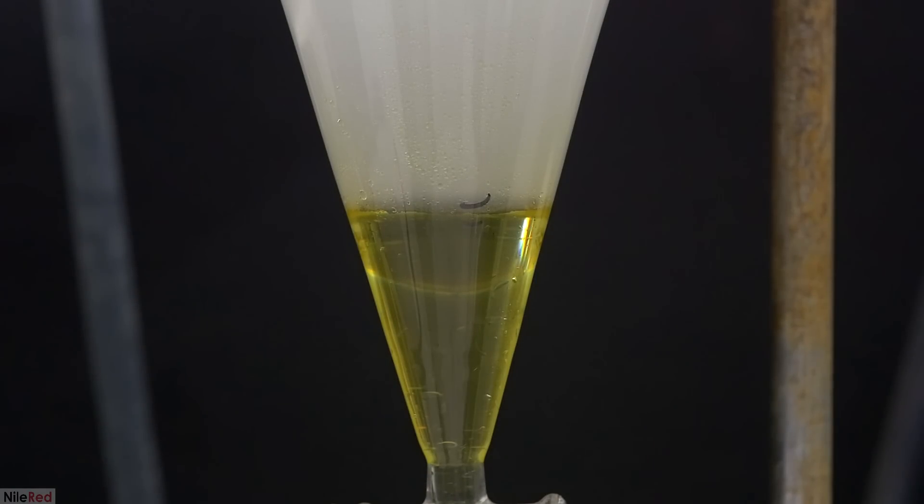I actually transferred the first distillate to a separatory funnel because I didn't expect there to be so much of it. When I take a look here, I can see that there's quite a bit of oil and I think this is actually the majority of the oil that I collected. After this initial oil came over, I think the rest of the distillation, which was something like 3 to 3.5 litres, only got trace amounts of oils and it's not really worth it.